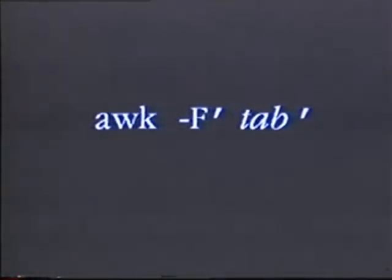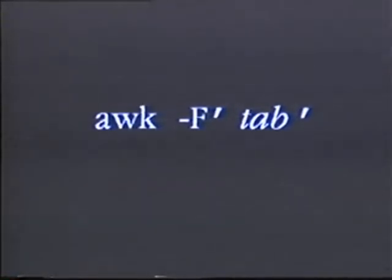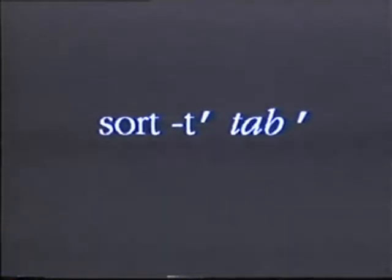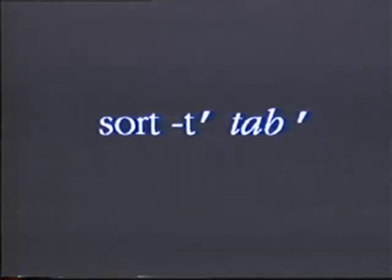In the awk command, you use a dash capital F followed by the character you want to separate the fields on. In this example, I want to separate the fields on a tab, so I've listed a tab inside single quotes after the capital F. In sort, you use dash lowercase t to identify the field separation character. The dash t is followed by the character you want to use — again, a tab listed inside single quotes. Remember, I want to find those in California, sort them by zip code, format them into one-up labels, and then print them at the printer. In my case, I'm simply going to put them to the screen, because I don't have the printer access set up here.